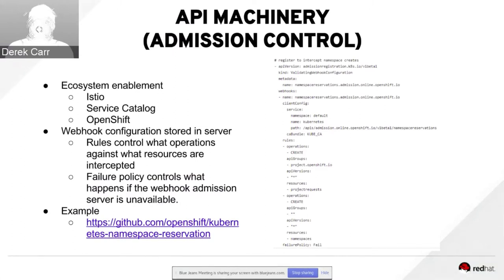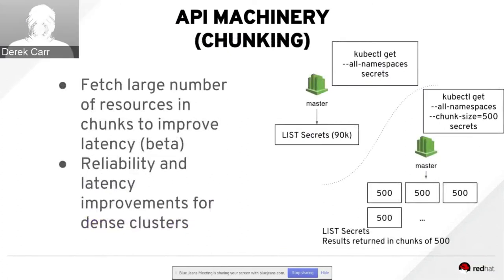This is particularly powerful if you're using custom resources, where many people are driving operator patterns and wanted to intercept creation of custom resources to perform an action. This now completes that vision. Another great thing from SIG API Machinery, which we touched on in the 1.8 community call, is chunking, which has now graduated to beta. This is of particular importance for operators of very large clusters — in our online environments, controllers commonly need to list all resources.